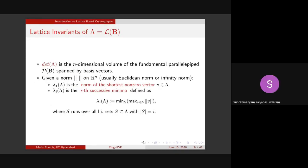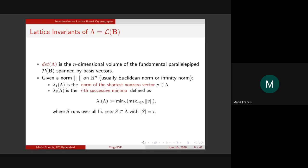Regarding the i-th successive minima and whether it relates to eigenvalues — I haven't really seen results connecting eigenvalues with this. The Gram-Schmidt orthogonalization comes in a lot, and eigenvectors may come in too, but I can explore that.